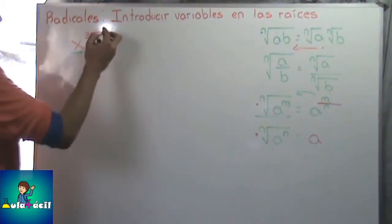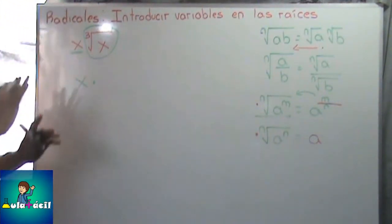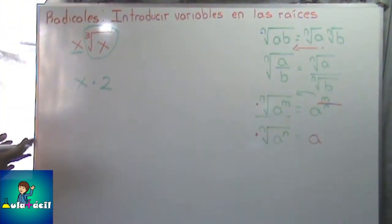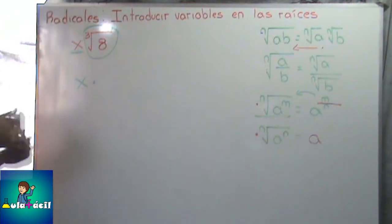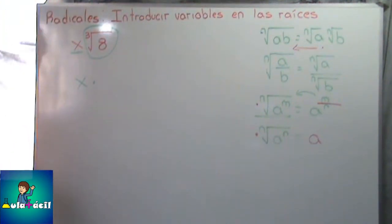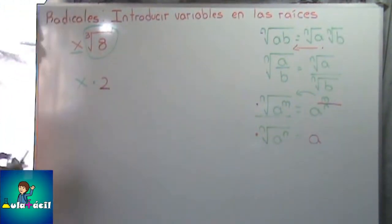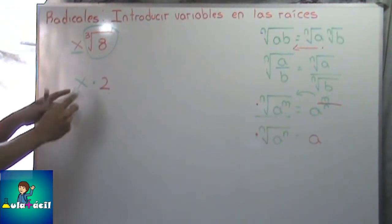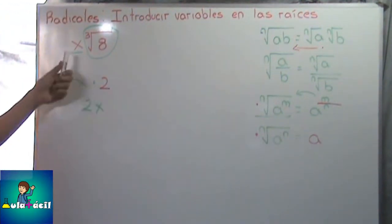Supongamos que nosotros calculamos esta raíz. Supongamos que damos X y el resultado, a lo mejor nos da 2. Vamos a ponerlo con un ejemplo numérico: raíz cúbica de 8. Tenemos X y enseguida la raíz cúbica de 8. Siguiendo la jerarquización de operaciones, primero se resuelven las potencias y raíces. Raíz cúbica de 8 nos da 2, y la variable que está afuera multiplica al resultado: X por 2 nos da 2X.